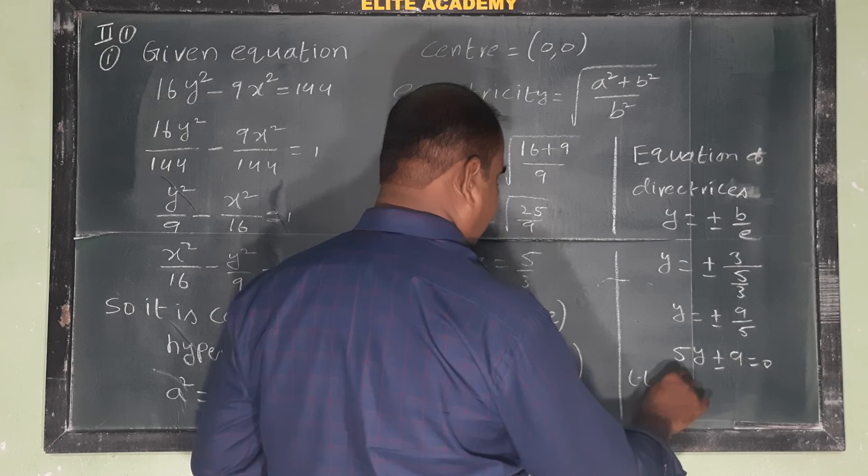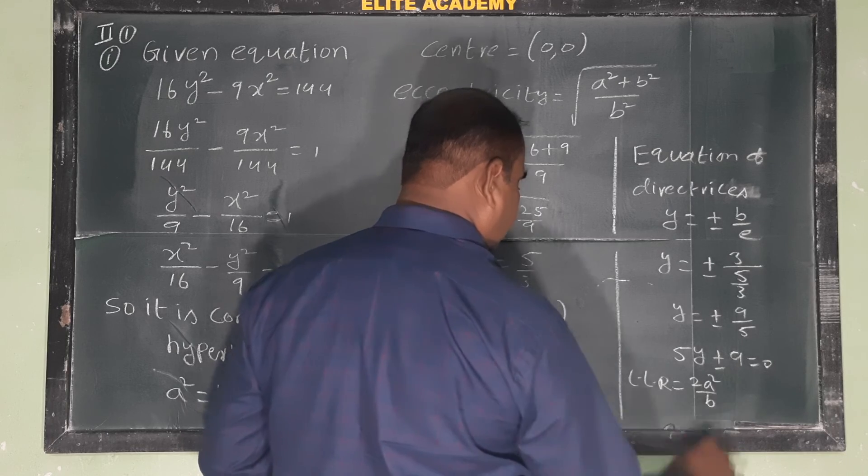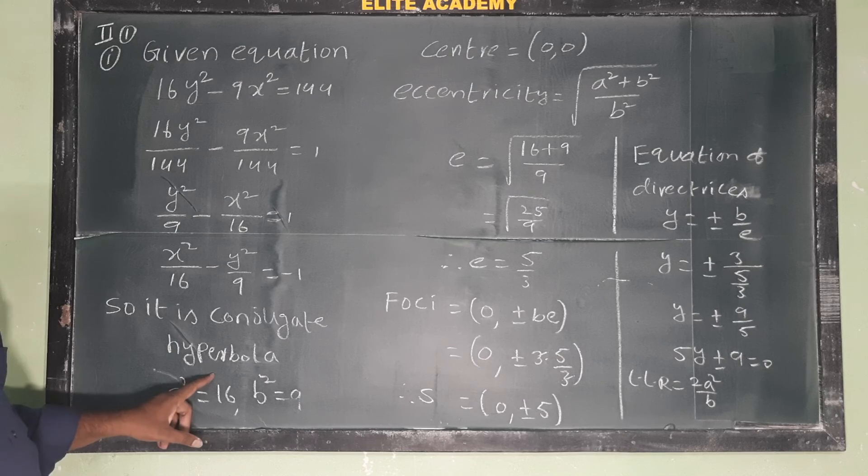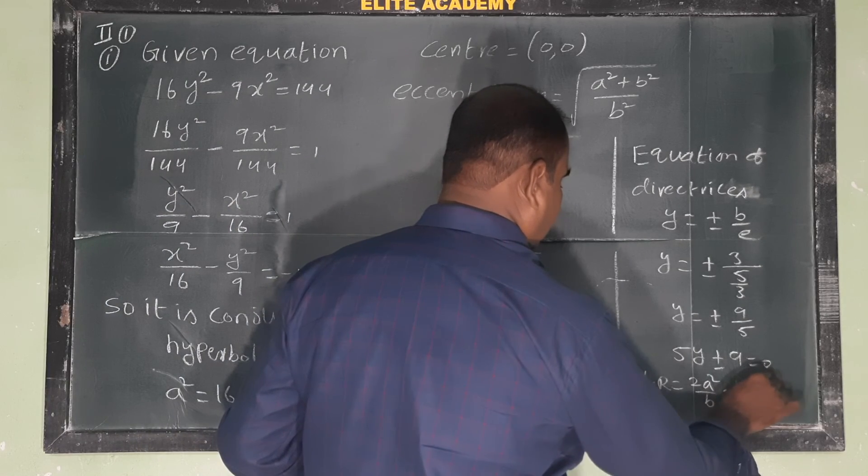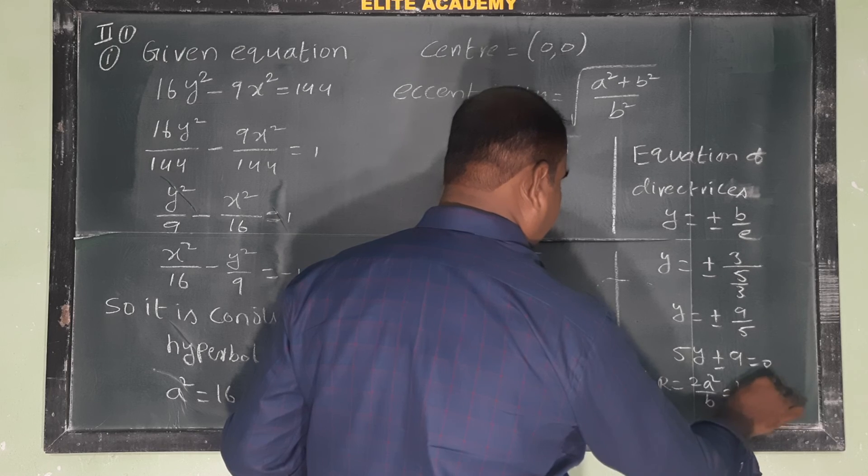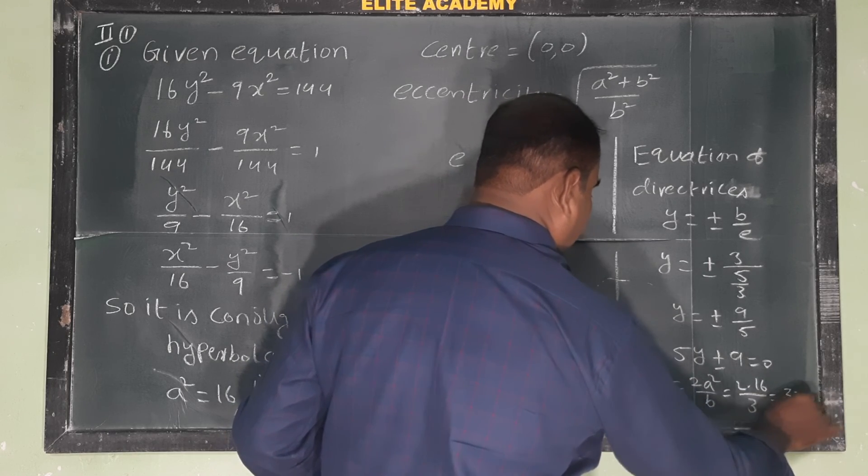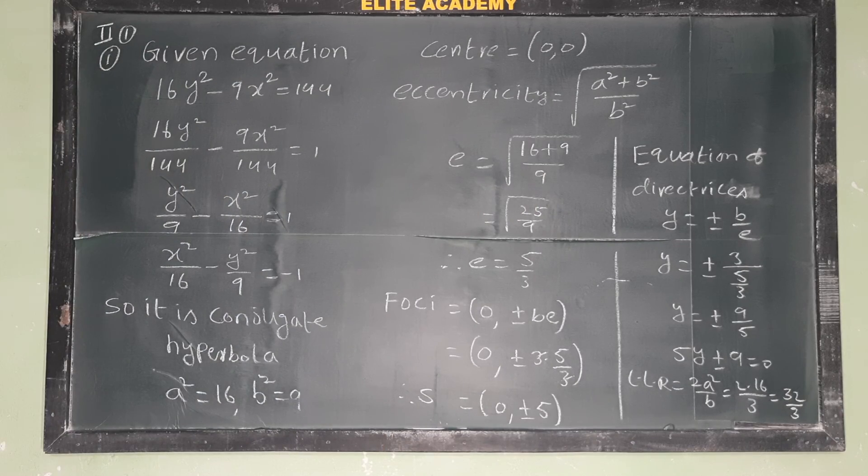Finally, latus rectum (LLR). For conjugate hyperbola, LLR = 2a²/b. So 2 × 16/3 = 32/3. That's the answer.